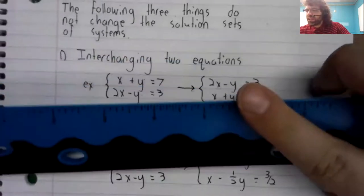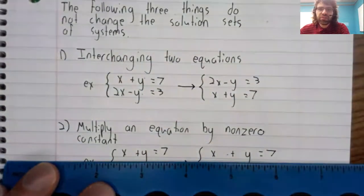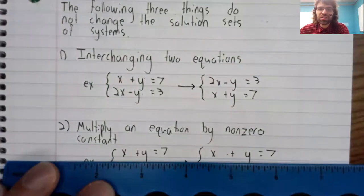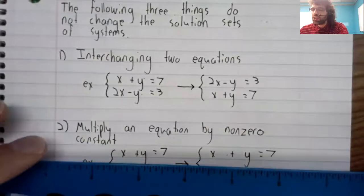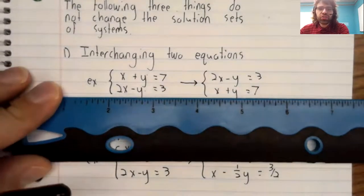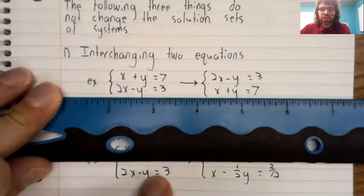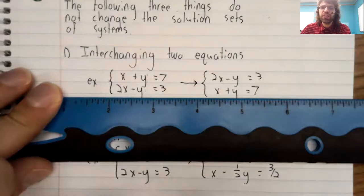Because obviously this equation and this equation have the same solution set. We haven't changed the first equation. And for the second equation, it's just high school algebra. You can take an equation and multiply both sides by the same number and you don't change the solutions to the equation.